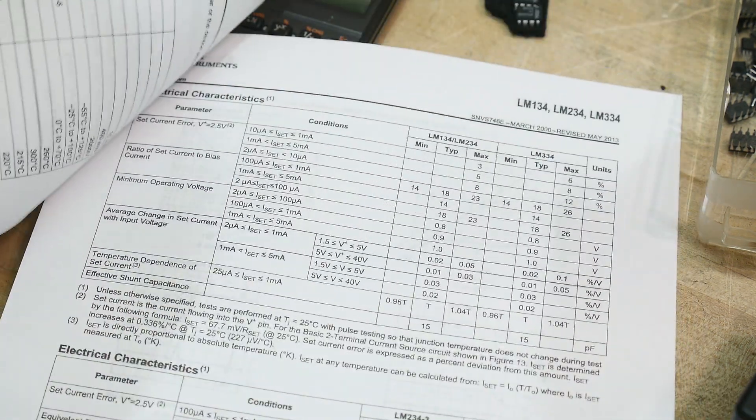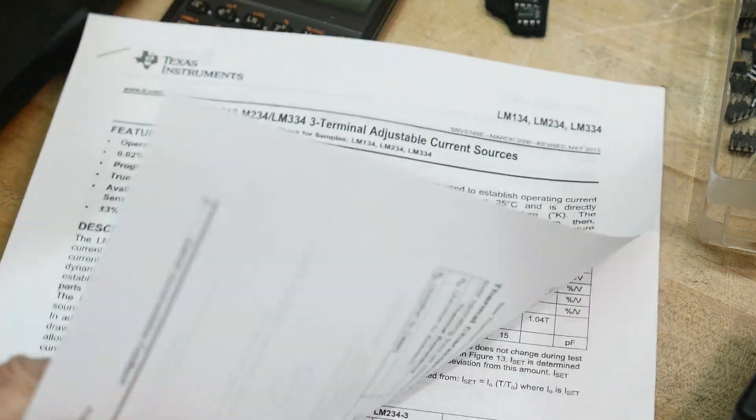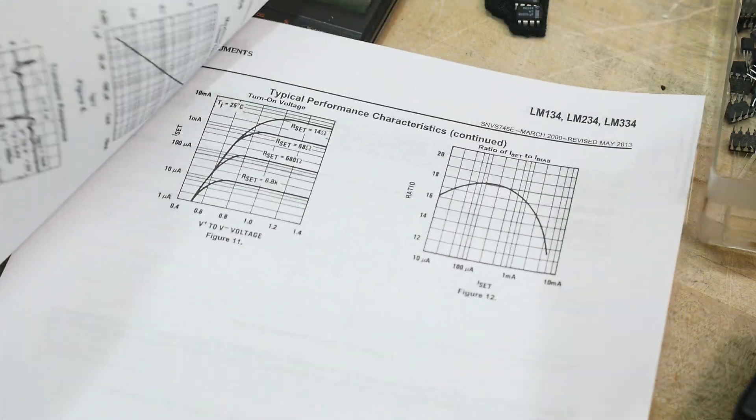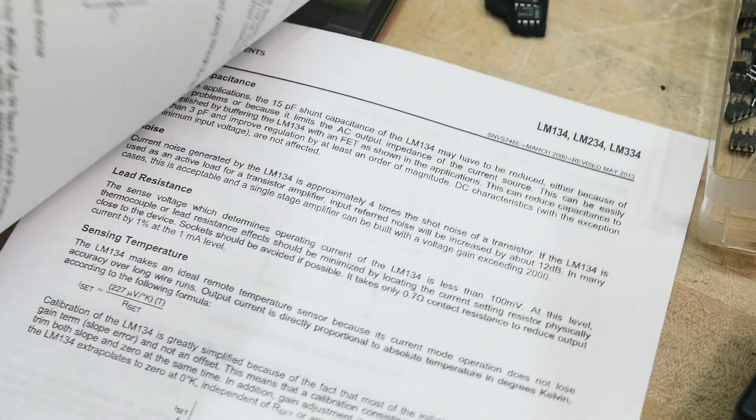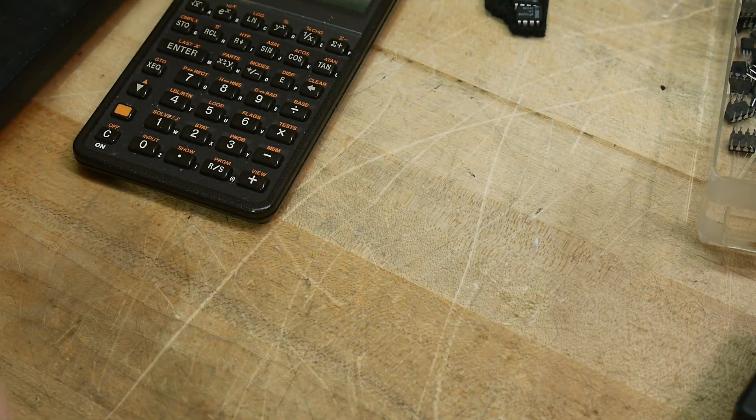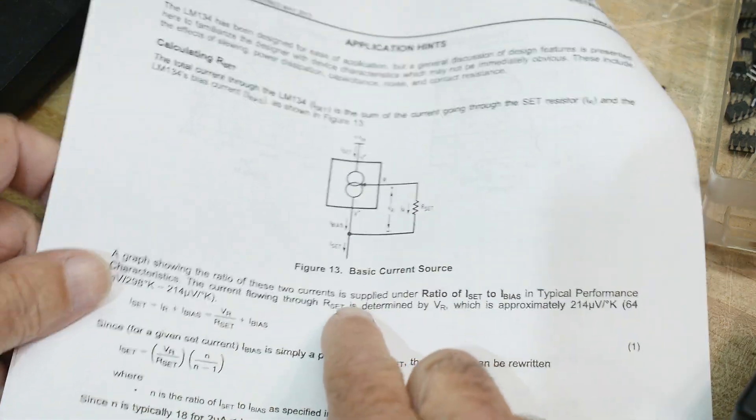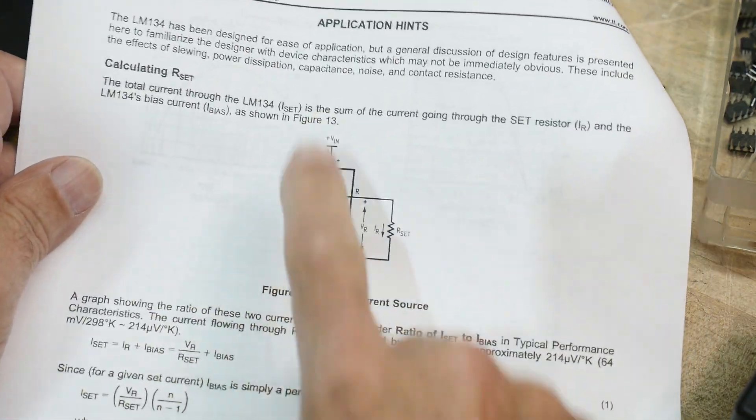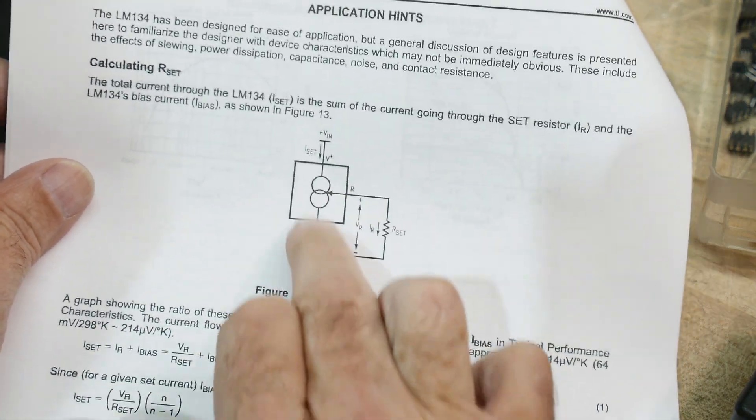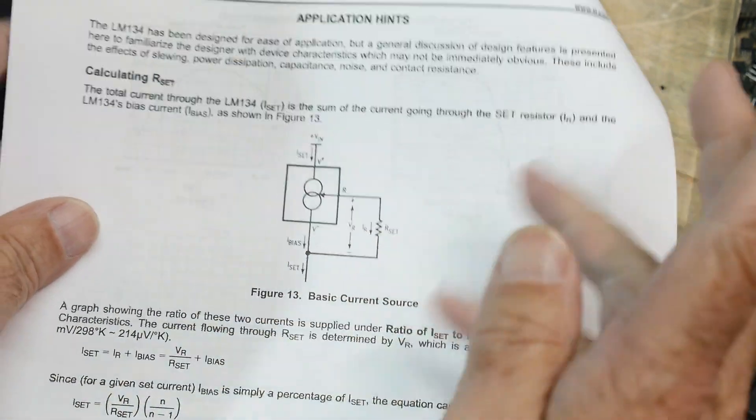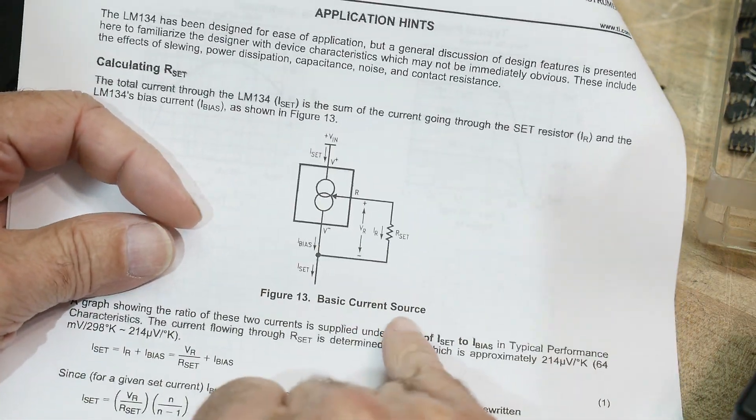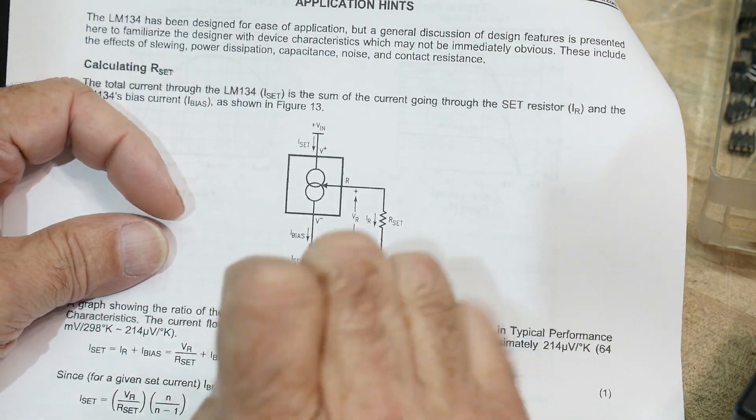So, the way that you operate with these things is the same as the TL431, only even easier. You have an in and out, and it is a current source, so some people say current sink, whatever. It says source here, basically sourcing current.